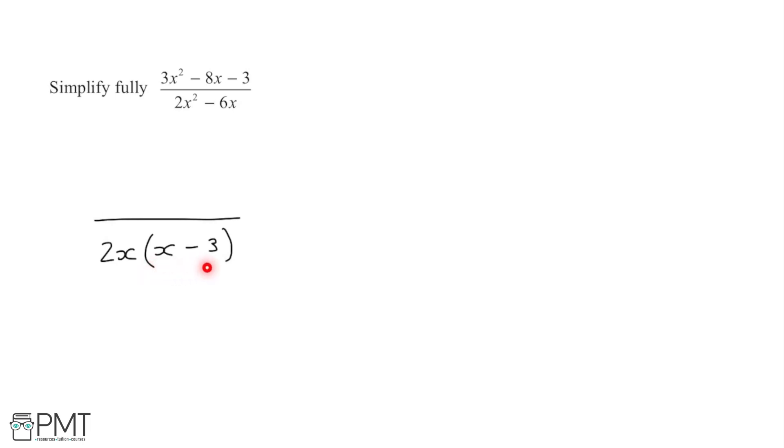If I look at the x minus 3, this links with the minus 3 up here. A way of thinking about this would be: if I had the x minus 3, what would I need to multiply it by to get to 3x squared minus 8x minus 3? Well, to get the 3x squared I need to multiply it by the 3x.